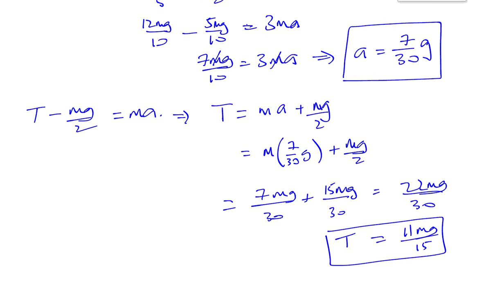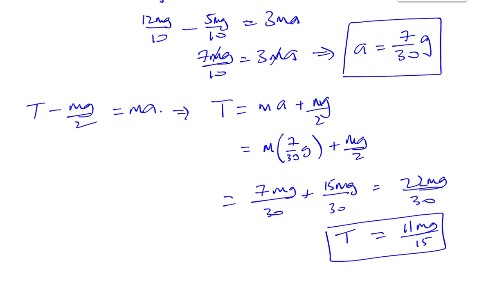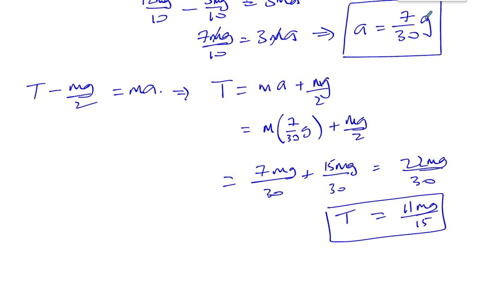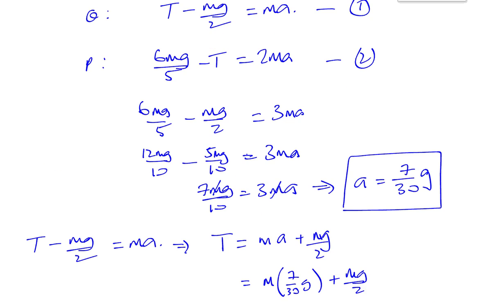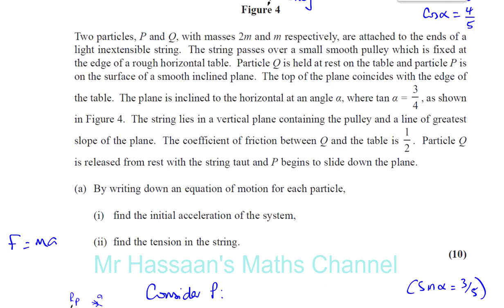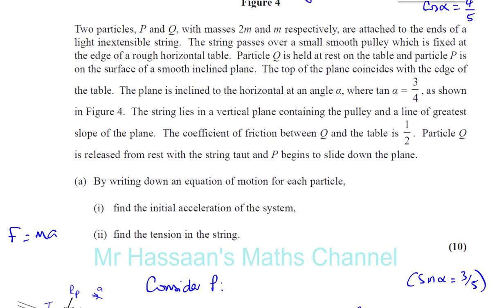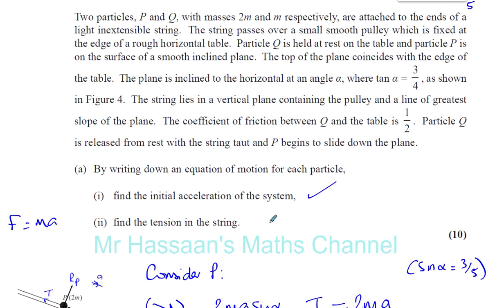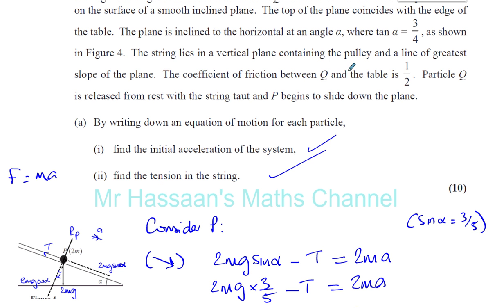So there we have the answer to question 8 part A. We found the acceleration, which is 7g/30, and the tension in the string, which is 11MG/15. In the next video I'm going to do part B.